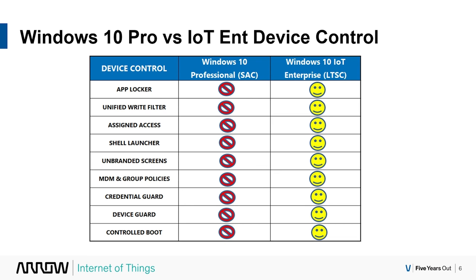Those Enterprise features give you the ability to control the device — extremely important for an IoT appliance. You get App Locker, Unified Write Filter, Assigned Access, Shell Launcher, unbranded boot screens, additional group policies and management capabilities, Credential Guard, Device Guard, and Controlled Boot. All features that help you control your appliance — and you get none of those with Windows 10 Pro.